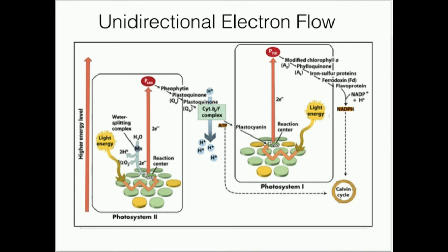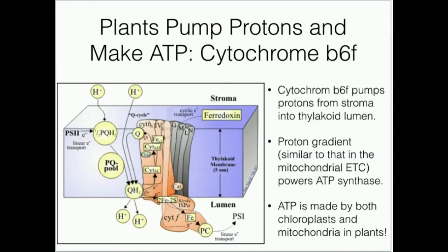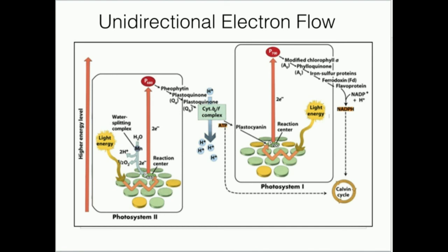The electrons from cytochrome B6F don't just stop there. As you can see, those electrons are ultimately transferred into an electron carrier identical to what we saw in the electron transport chain in the mitochondria — ubiquinone. It turns out there is a Q cycle here, just like in the mitochondria in complex III. This ubiquinone reduces to ubiquinol, which then transfers its electrons to a protein called plastocyanin. Plastocyanin's function is to take the electrons from cytochrome B6F and transfer them to photosystem I.